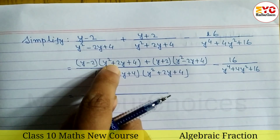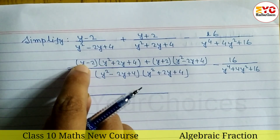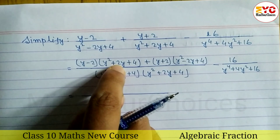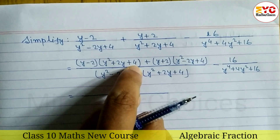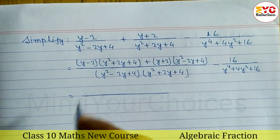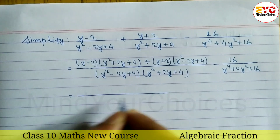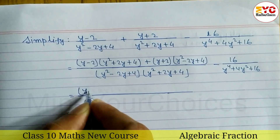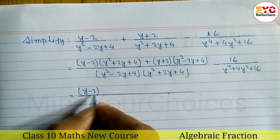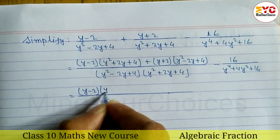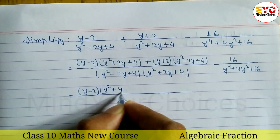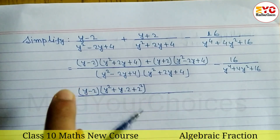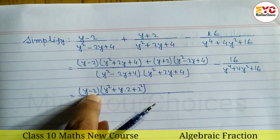Now you can see here this is in the form of a formula: a minus b, where y minus 2 corresponds to a minus b, and a squared plus ab plus b squared. We can write y minus 2 times (y squared plus y times 2 plus 2 squared). Now we can write a minus b times (a squared plus ab plus b squared).